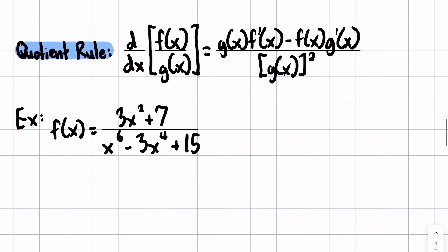Next is the quotient rule. So this one looks really dense in the definition, but the trick that I use to remember it is low d high minus high d low over low low, right? Low low meaning low squared. So in this example...